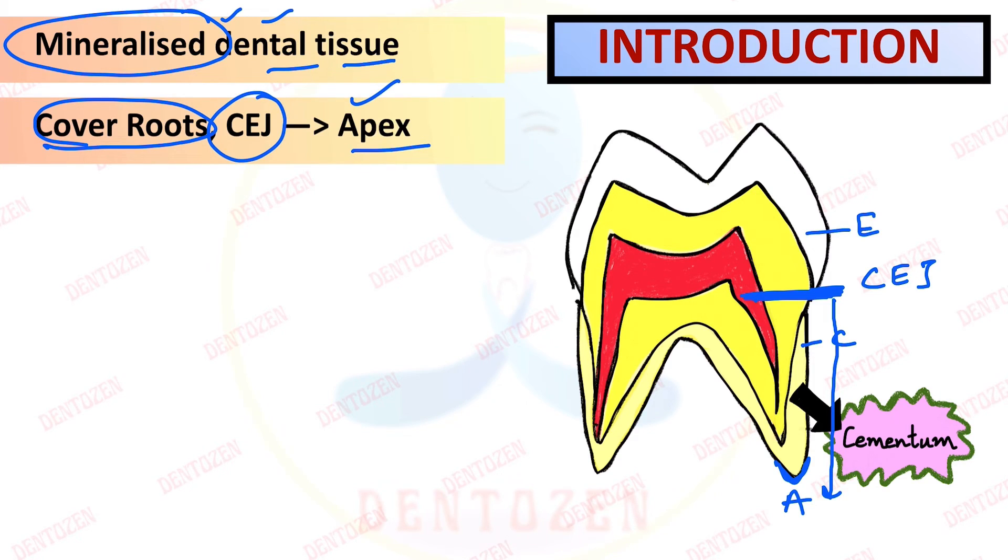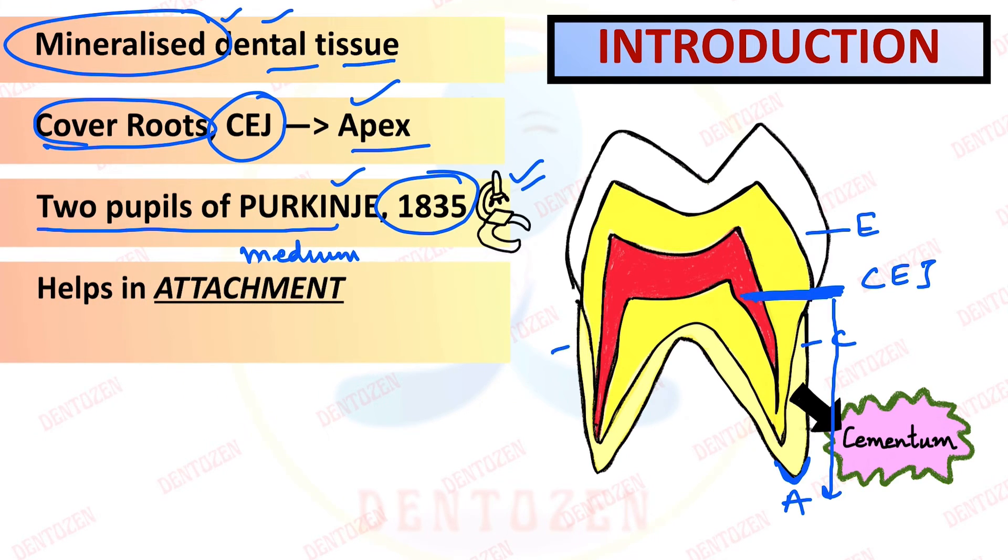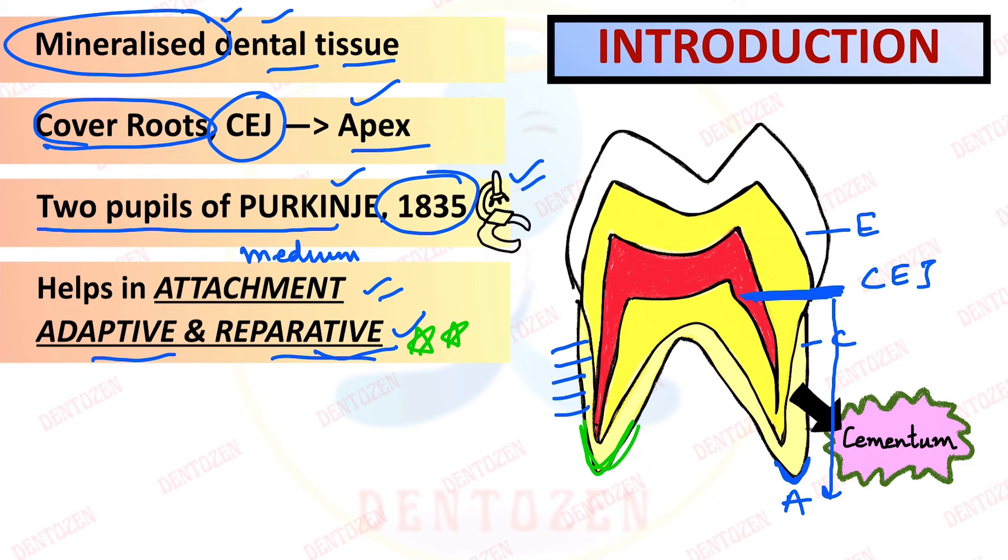Now who discovered the cementum? Cementum was first demonstrated by two pupils of Purkinje microscopically in the year 1835. Now if I ask you what are the important roles of cementum? One role you already know, that it provides medium for the attachment of the fibers through which the tooth is attached to the bone. Second important function of cementum is it helps in the repair. Yes, it has adaptive and reparative function. If it is damaged it can repair itself, it can form again. So those two are the important functions of cementum, attachment and reparative function.